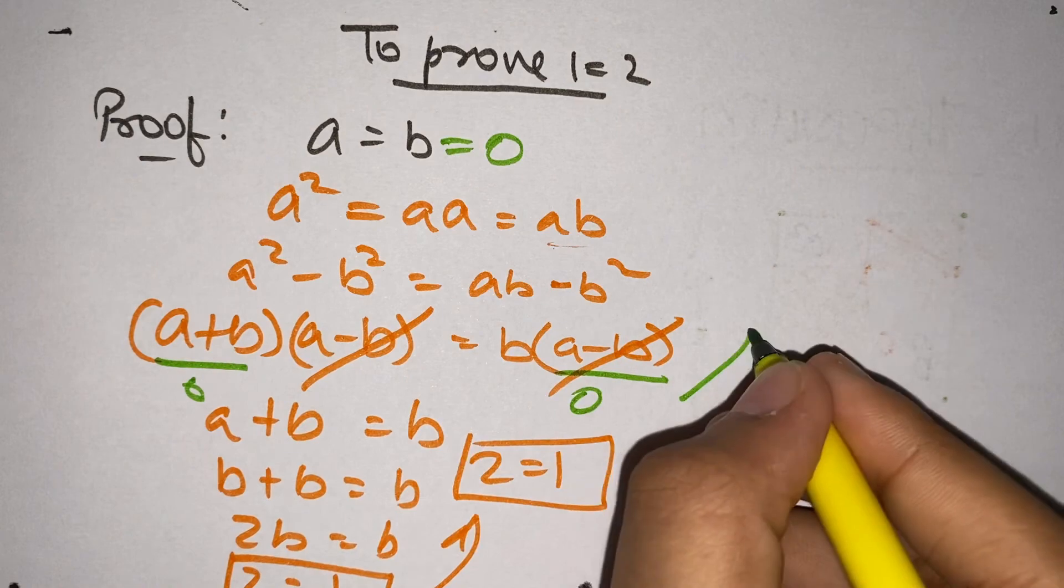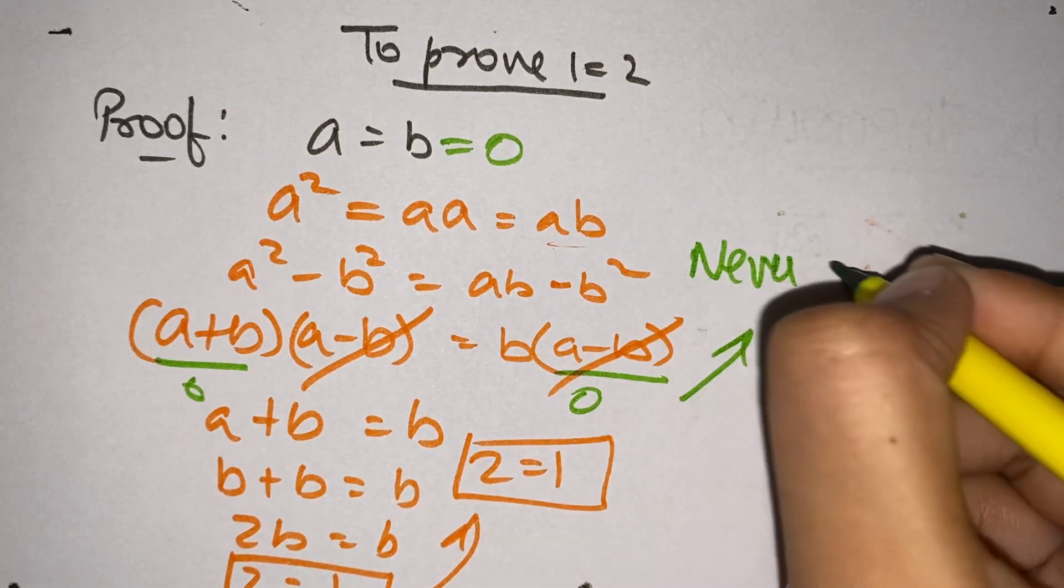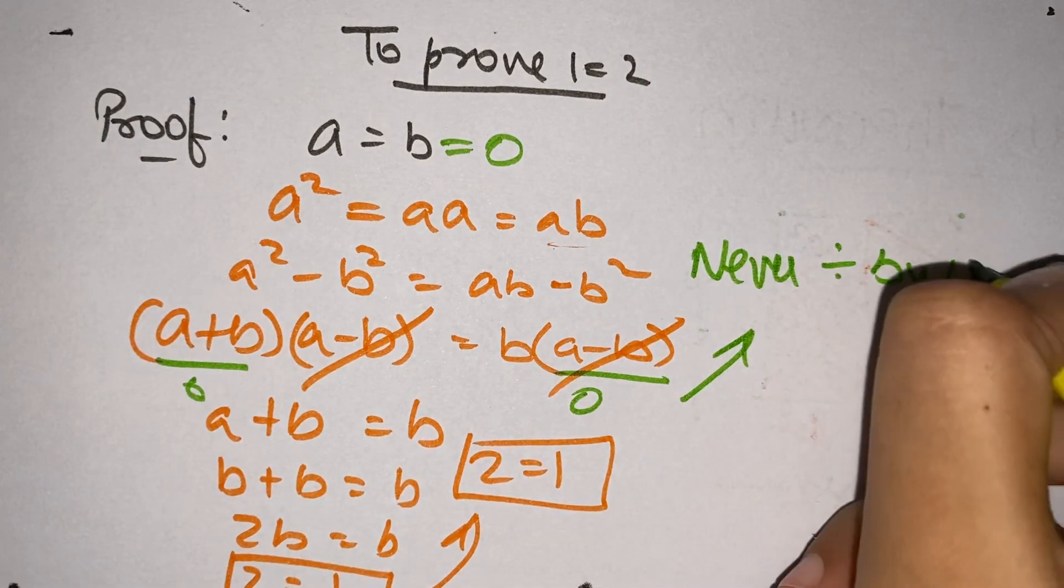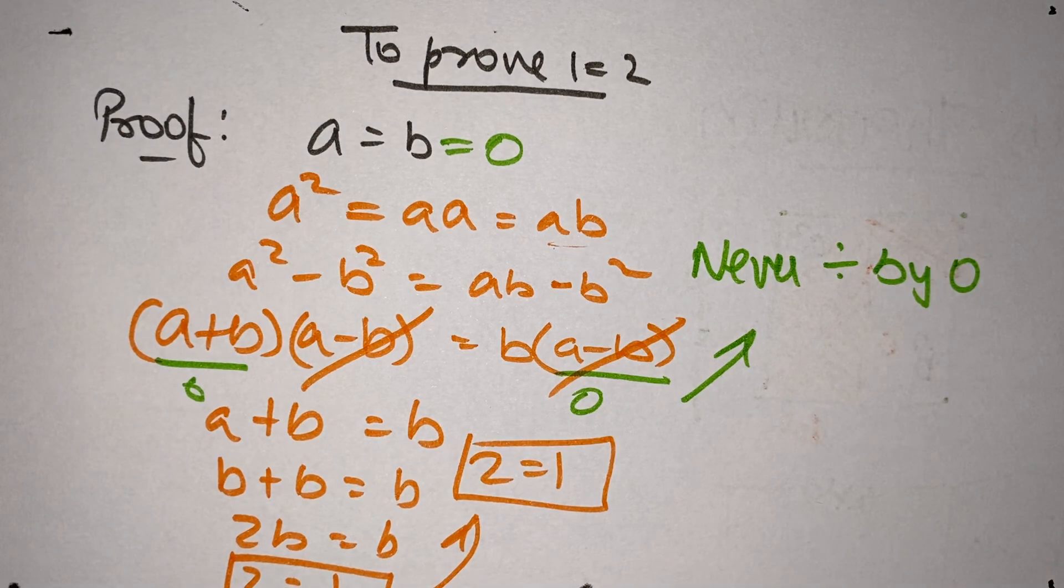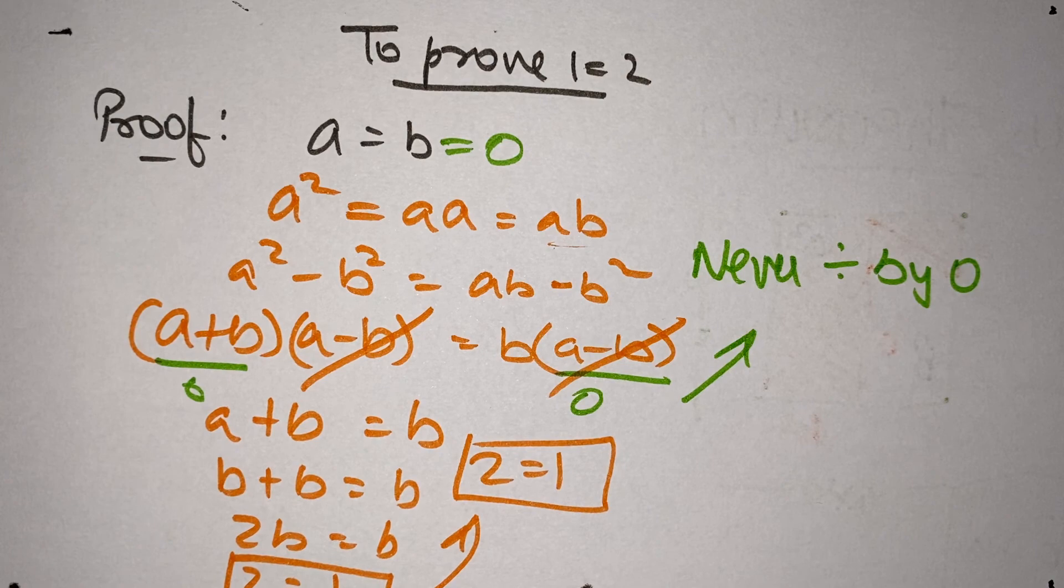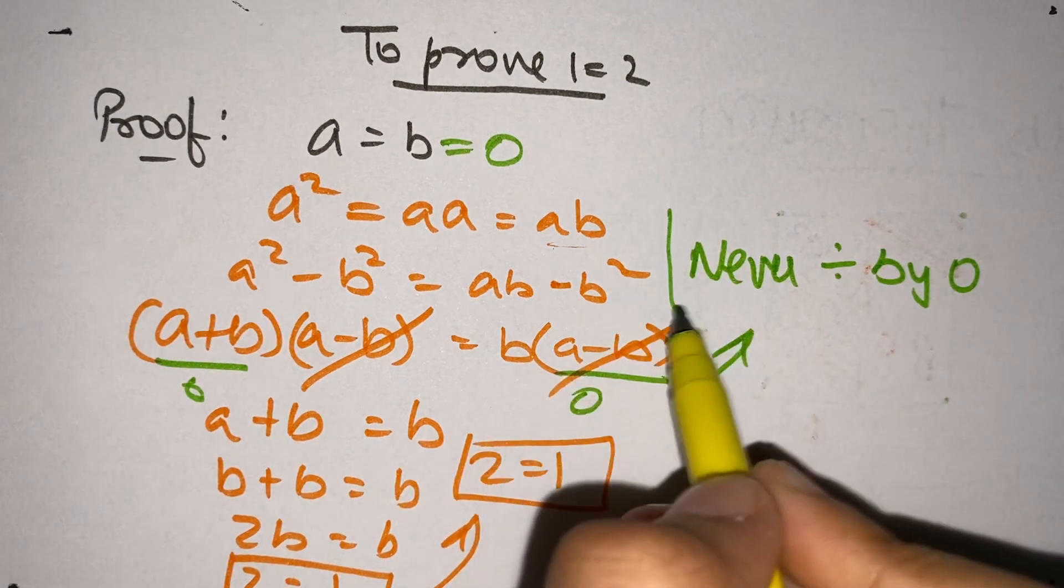So, this is the lesson for the day. Never divide by 0. You can end up with any sort of thing. 2 equals 1, 2 equals 10. And this will blow your mind away. So, never ever divide by 0.